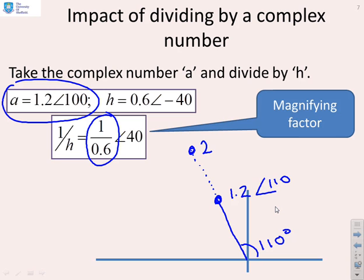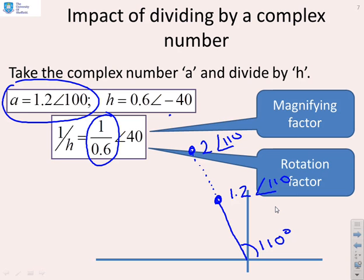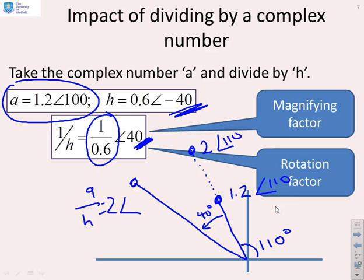What about the phase? You can see the phase of h is minus 40. So if I divide by h, I'm actually rotating by plus 40. And so therefore, I'm going to rotate it this way by 40 degrees, and I'm going to end up over here with a over h equals 2 arg 140.